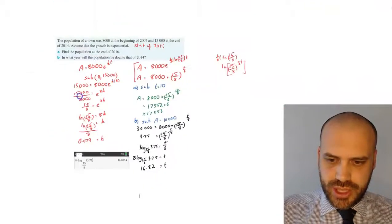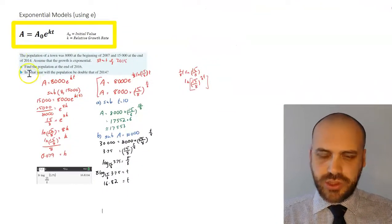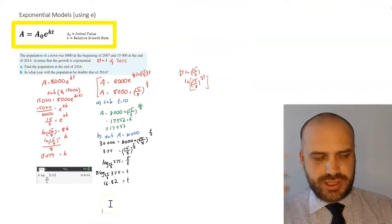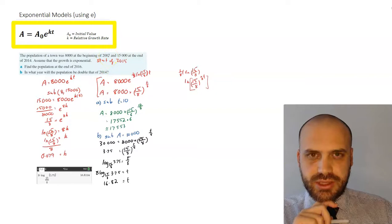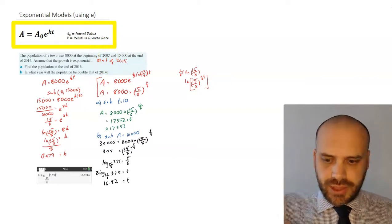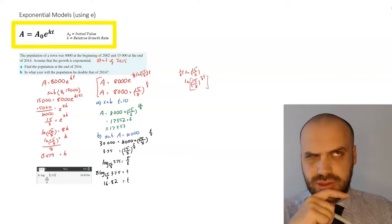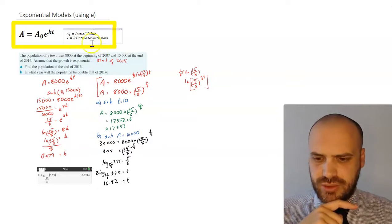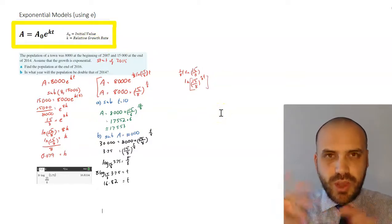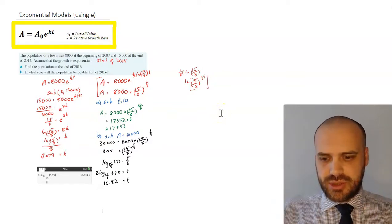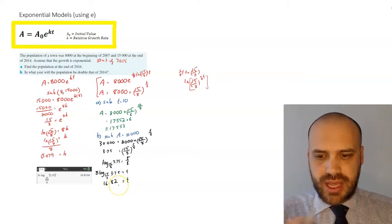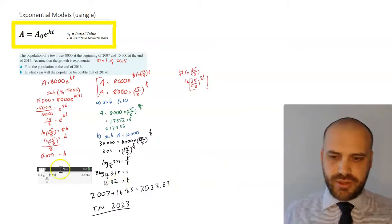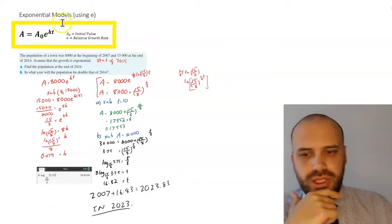But what did the question ask? The question asked, in what year? Not year 16.82. 2007 was when we started, so 2007 plus 16 makes 2023. So somewhere in year 2023, towards the end of year 2023, that's when that will happen. Alright, that was an exponential model using e.